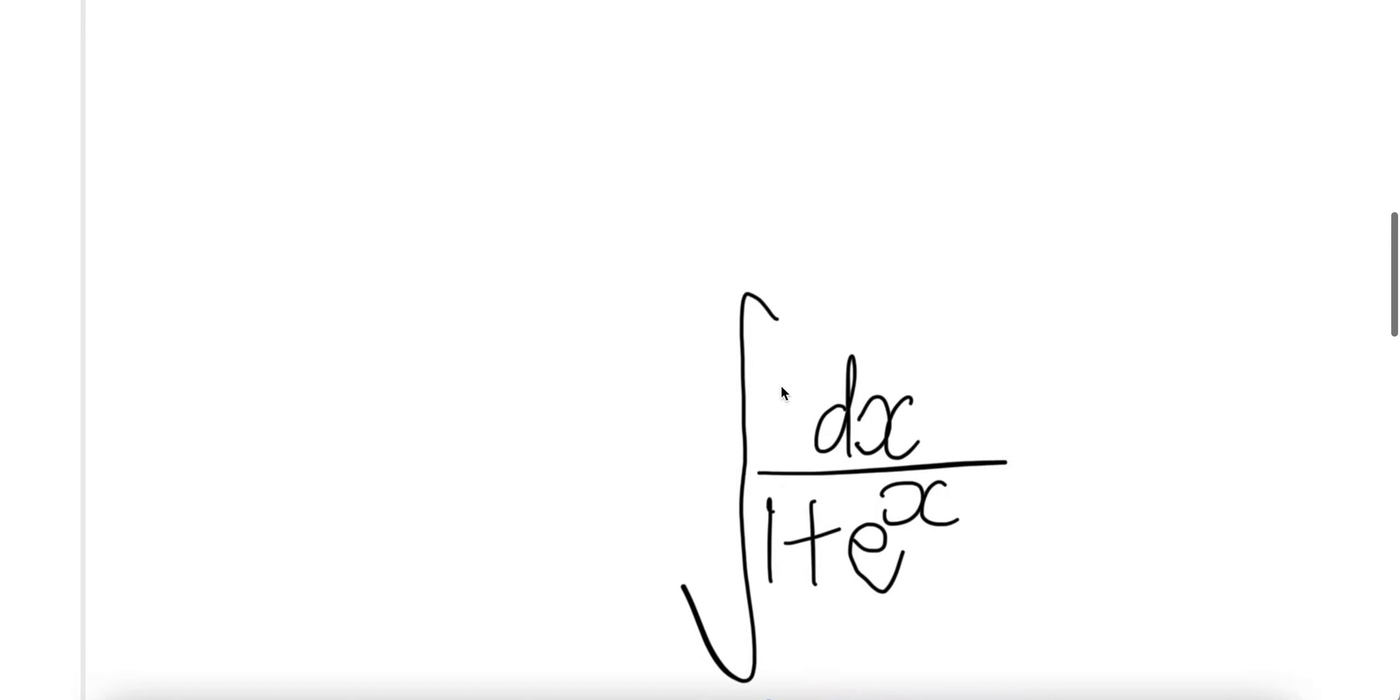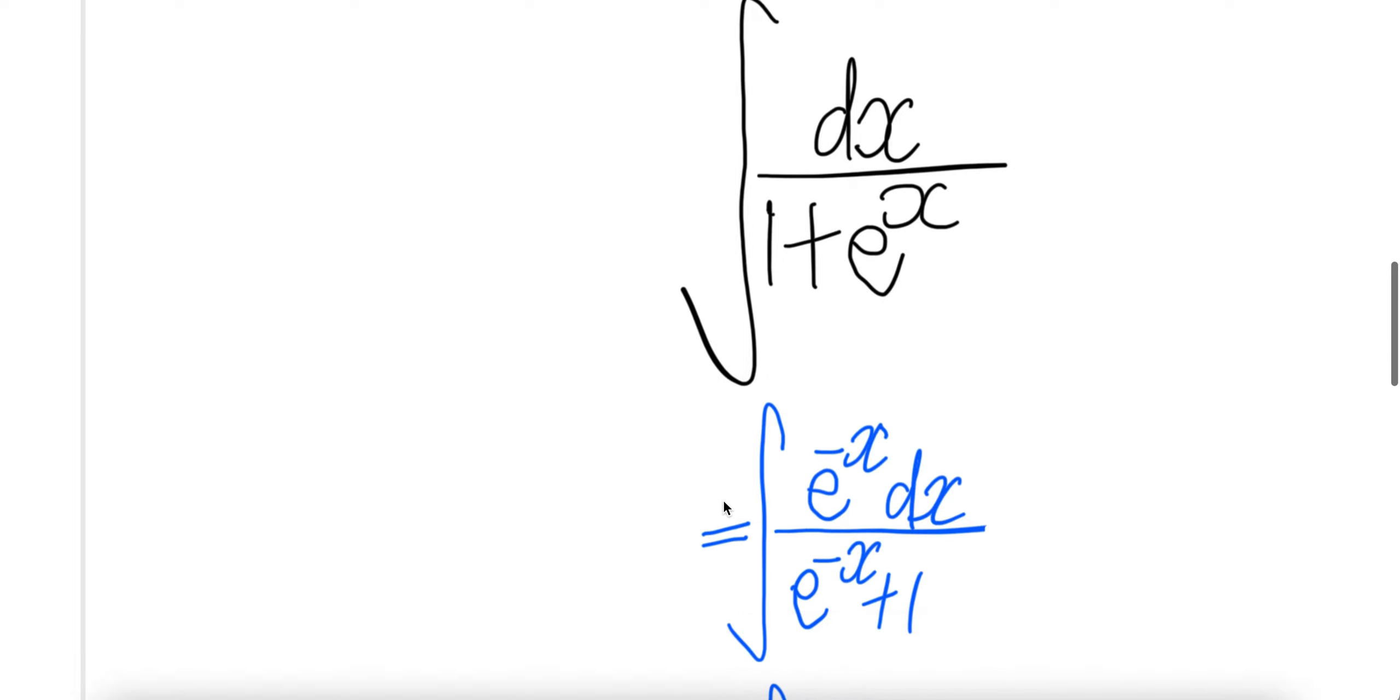Previously, we multiplied top and bottom with e to the power x here, e to the power x here. Now this time we are not, we are going to multiply with e to the power negative x, e to the power negative x. Top and bottom.